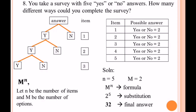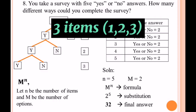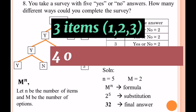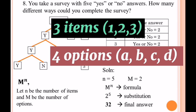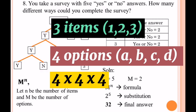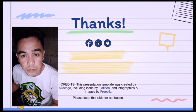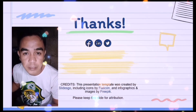So if the problem asks for the number of different ways to complete the survey, we use this formula. Even in a multiple choice example — if we have three items and each item has four options, we solve it as four to the power of three: four times four times four is 64. I hope you learned something from this video. Good day and God bless everyone.